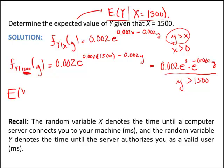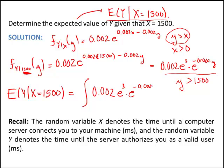The expected value of y given x equals 1500 is easy to find once you have the conditional density function. This is the integral from y equals 1500 to infinity of y times the conditional density, which is 0.002 e to the 3rd times e to the negative 0.002y, dy. The lower bound is 1500 because we're given x is 1500, and that became the lower bound of y. When I evaluate this, I get 2000 milliseconds.